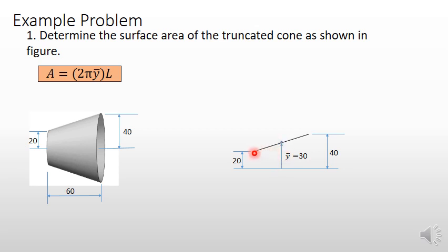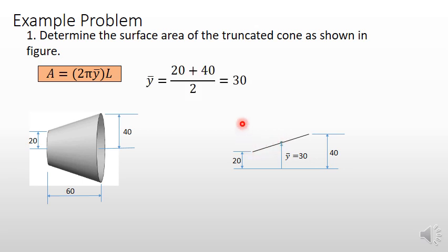This point is at height 20 and this point is at height 40. The centroid is at the midpoint of this line. Therefore, ȳ can be obtained by taking the average of these two: (20 + 40) / 2 = (y₁ + y₂) / 2 = 30.